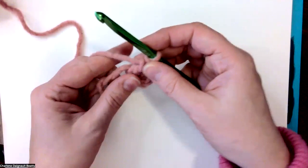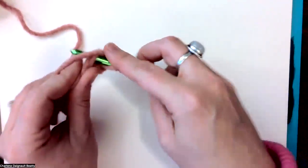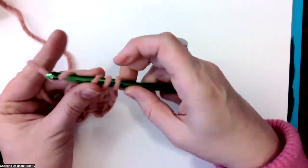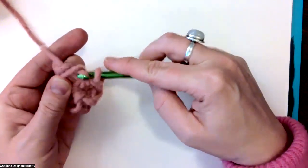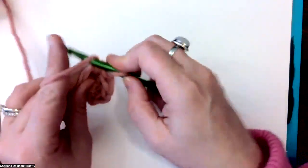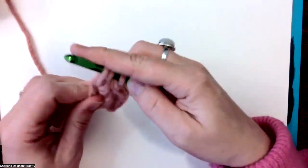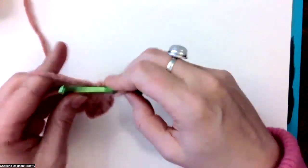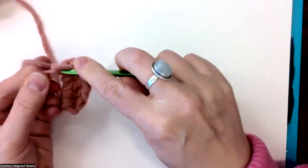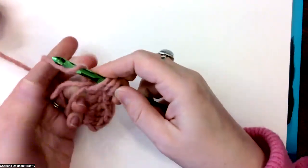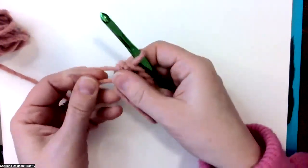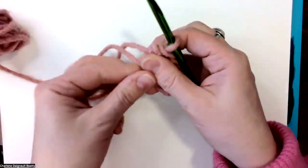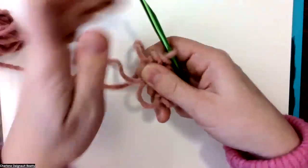Now I'm going to do three half double crochets. So one, and instead of pulling through two, I pull through all three for a half double crochet. Okay, one.